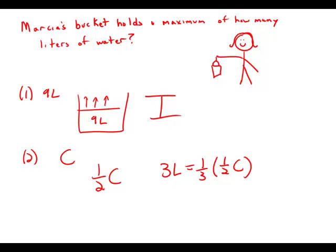Well, this gives us an equation. This would allow us to solve for the capacity of the bucket. So we don't actually have to go through that solution because this is data sufficiency. It's enough to know that we could solve for it.